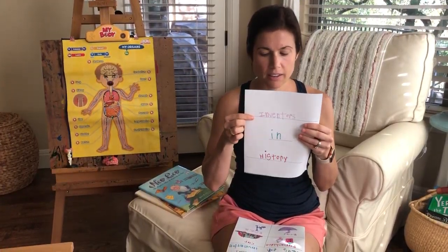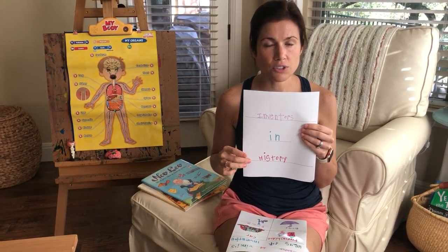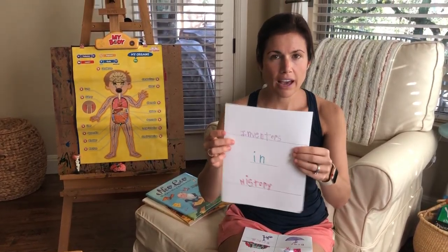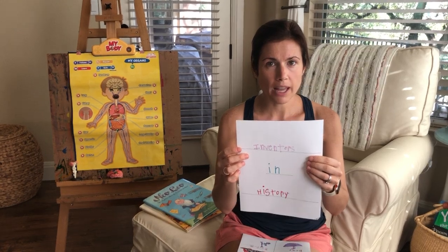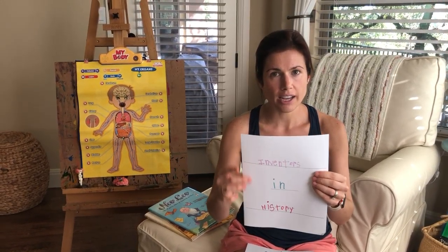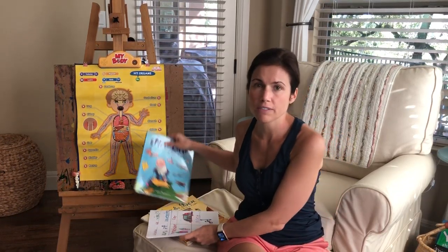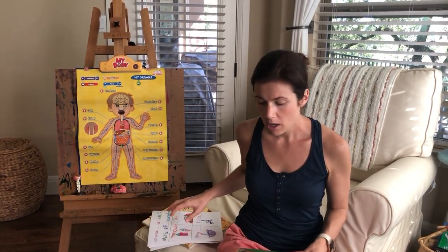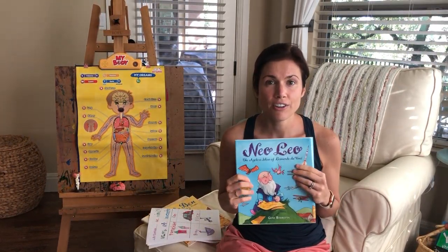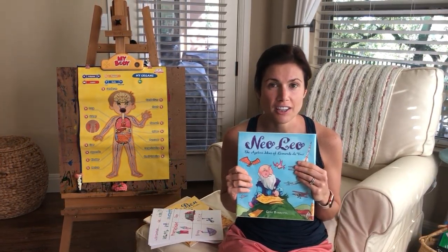Hey Flamingos! We're going to go over the next part of your invention sketchbook, which is 'Inventors in History.' If you have this page blank in your sketchbook, you should write in 'Inventors in History' — there are lines on the page, and you can ask mom and dad to help you write these words.